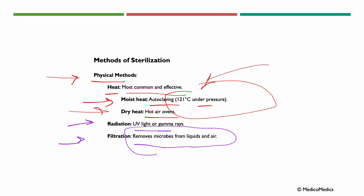Sterilization uses tools such as heat, radiation, light, or chemicals. For example, although not shown here, we have ethylene oxide gas, which sterilizes delicate instruments. These tools — heat, radiation, light, and chemicals — are used to destroy microbes.